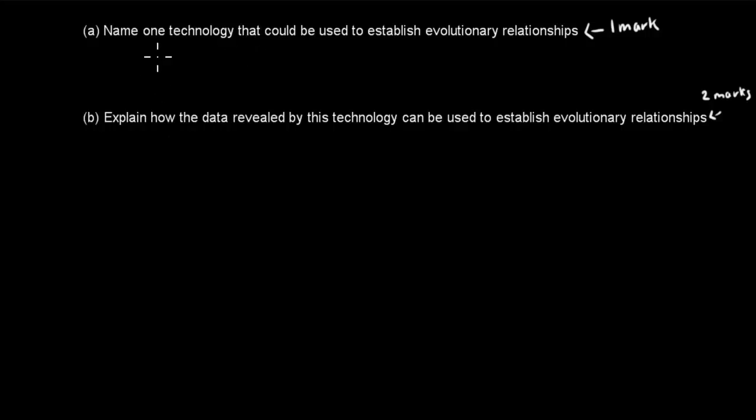So you have two parts to this question. The first one, part A, says name one technology that could be used to establish evolutionary relationships. That's worth one mark. Part B was explain how the data revealed by this technology can be used to establish evolutionary relationships. That's worth two marks. So pause the video and attempt the question, and I'll go over the actual answer itself.